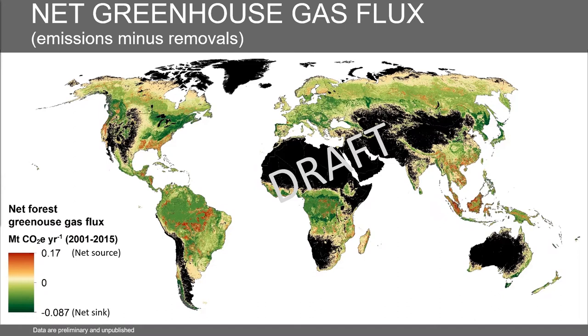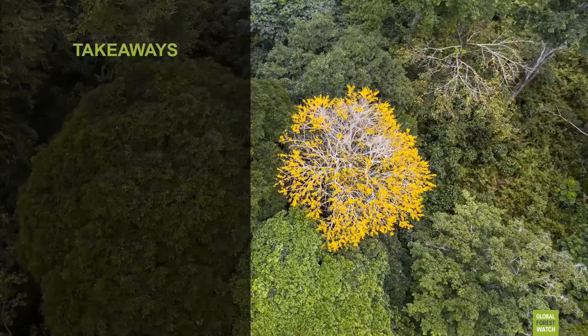Combining emissions and sequestration into the difference between them gives the net greenhouse gas flux. Red pixels are where emissions are higher than sequestration; green pixels are where sequestration is higher than emissions. Almost all forest has higher sequestration than emissions. Areas like the arc of deforestation in Brazil and parts of Southeast Asia are net greenhouse gas sources. This provides an unprecedented view of emissions, sequestration, and their balance across forests on the planet.